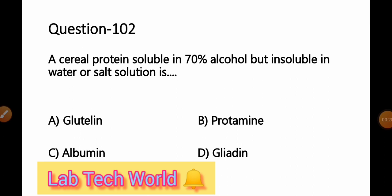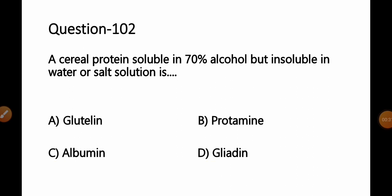Let's start today's MCQs Question Number 102. A cereal protein soluble in 70% alcohol but insoluble in water or salt solution is? Option A. Glutelin. B. Protamine. C. Albumin. D. Gliadine.